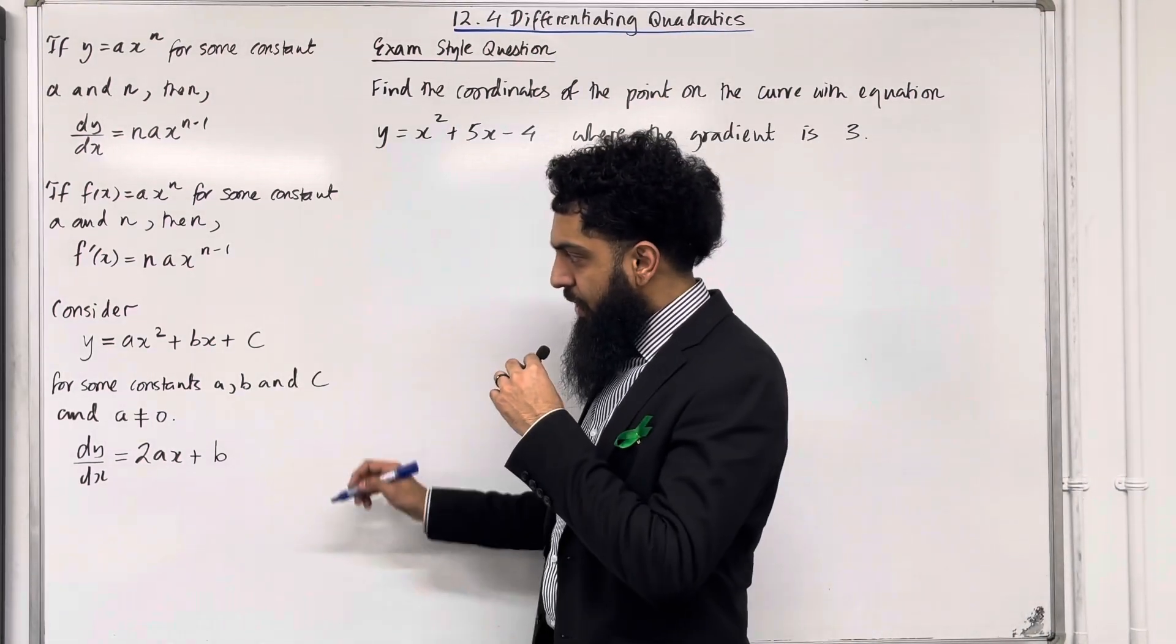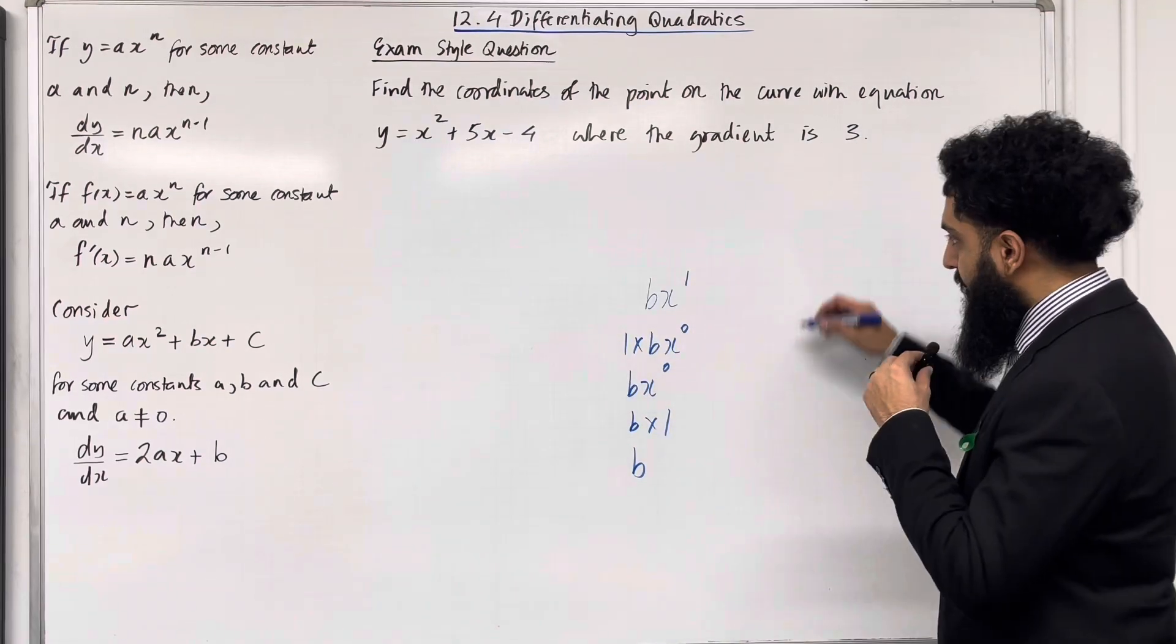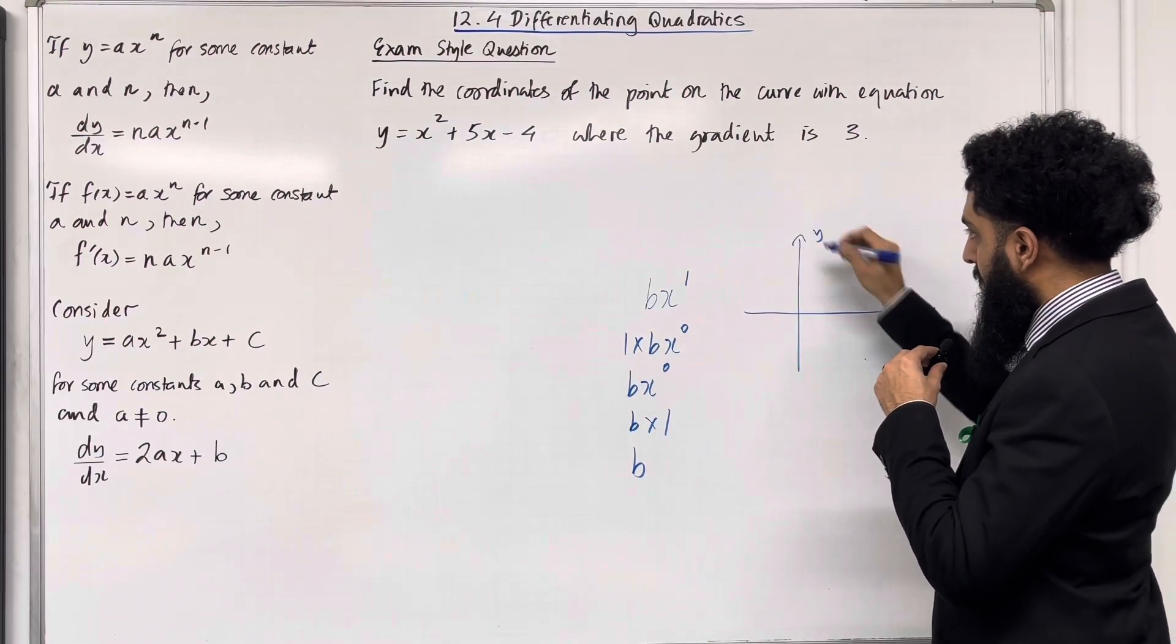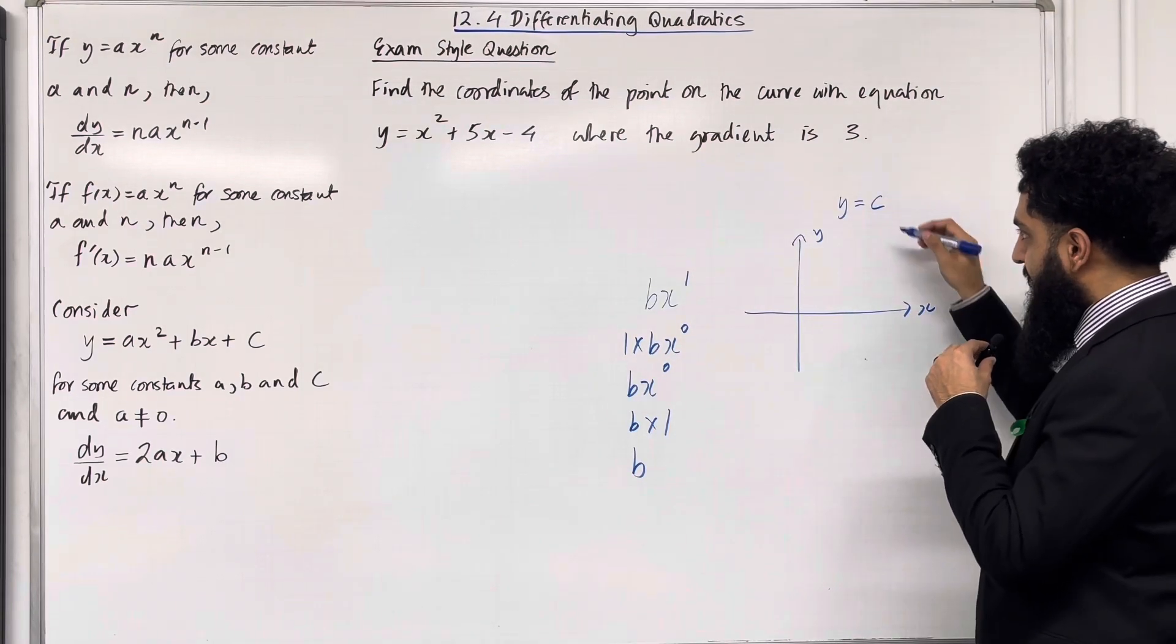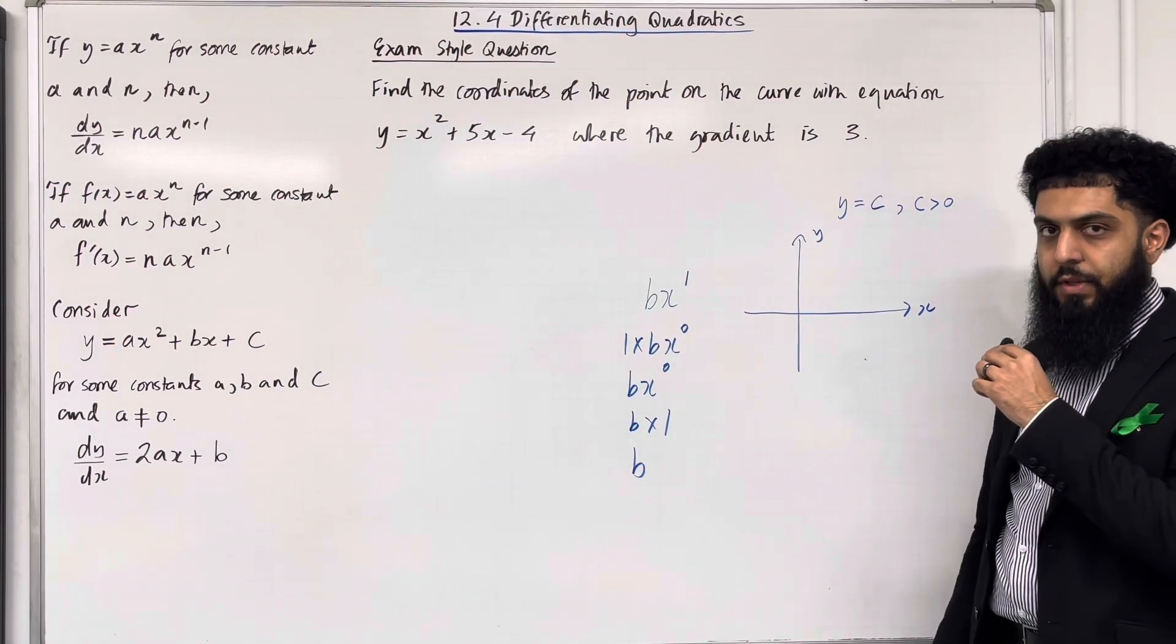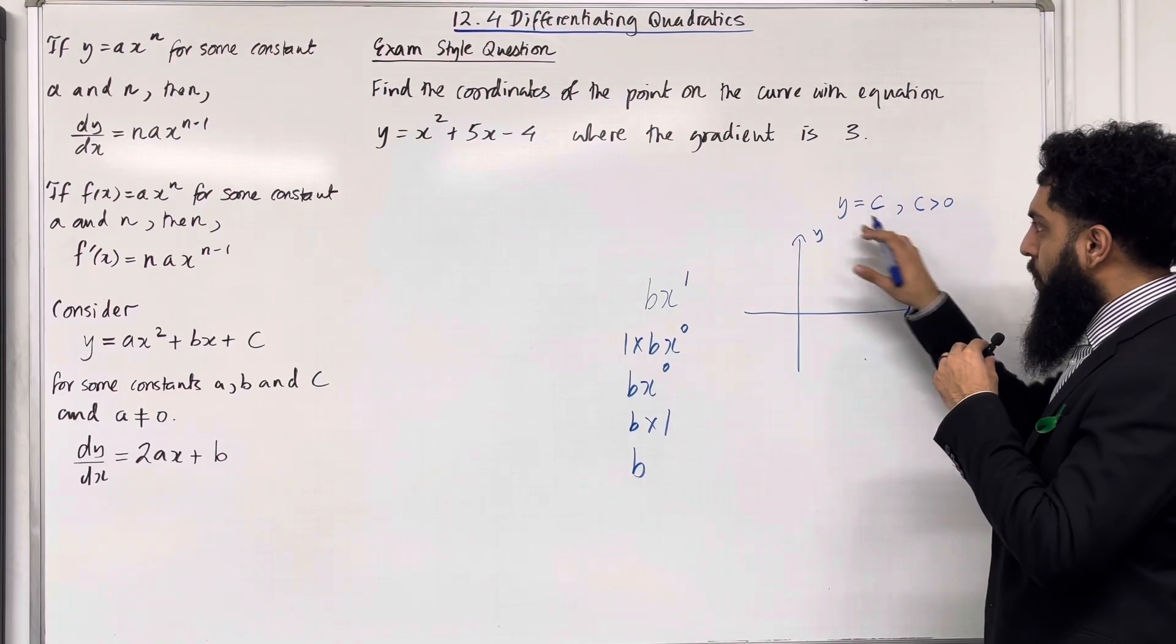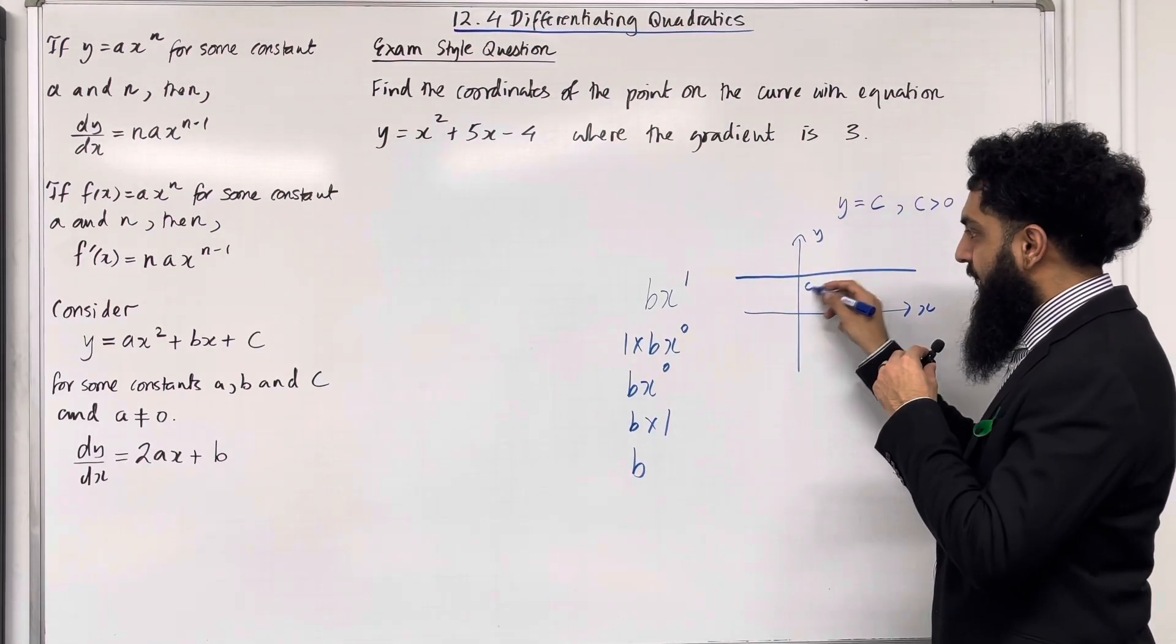c is a constant. If you differentiate a constant, you get 0. Let me explain why. So if I draw a coordinate grid, and I draw y equals c, where c is a positive constant. For example, it could be negative. But for now, let's just treat c to be a positive constant. c could also be 0, but c is greater than 0.